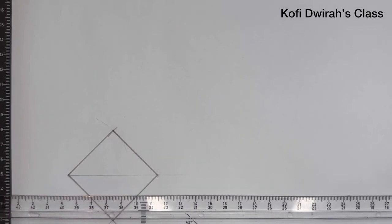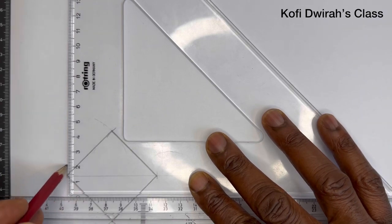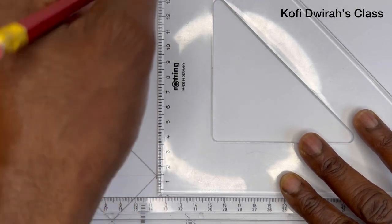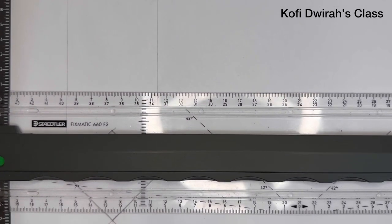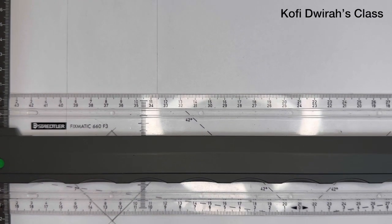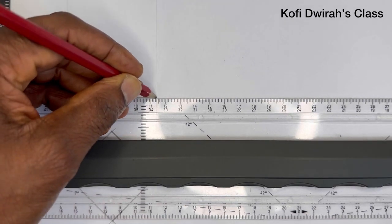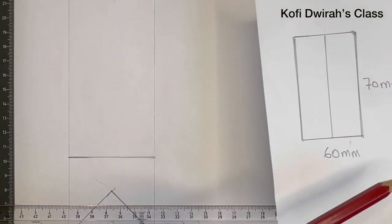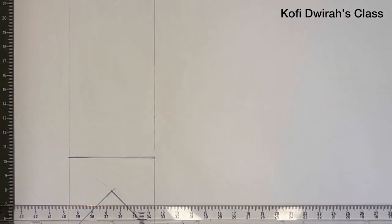Draw a faint line from this point, then from the next point draw another faint line going like this. Move your T-square up and draw a line. Then measure 70 millimeters — that is the height — the distance from the base to this side is 70 millimeters. With your divider or compass, measure 70 millimeters and mark it.